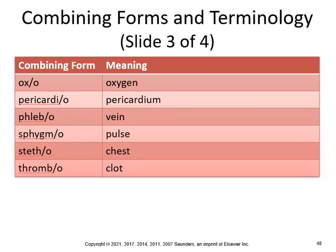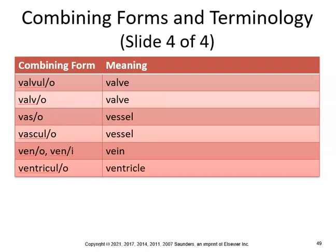Phleb means vein — phlebotomy is incision of a vein, phlebitis is inflammation of a vein. Sphygma means pulse, stethys means chest, and thrombo means clot. Hypoxia is the condition of decreased oxygen. A sphygmomanometer is an instrument to measure blood pressure, and a stethoscope is an instrument to examine the chest.